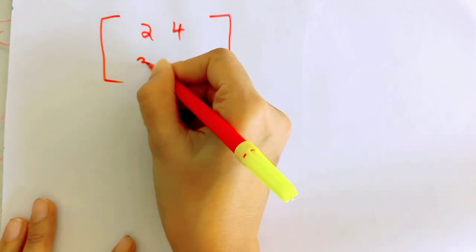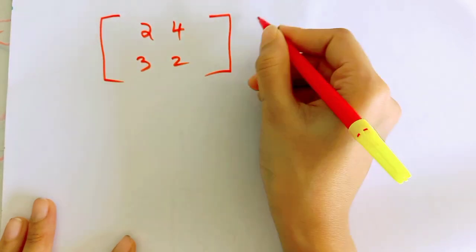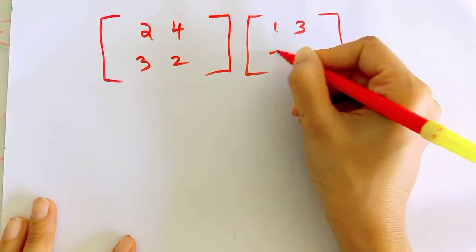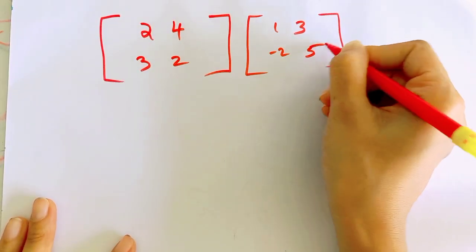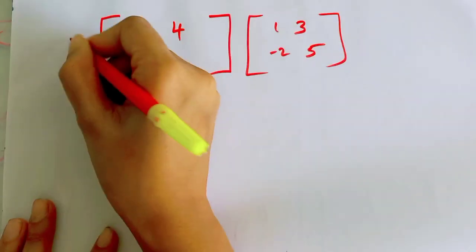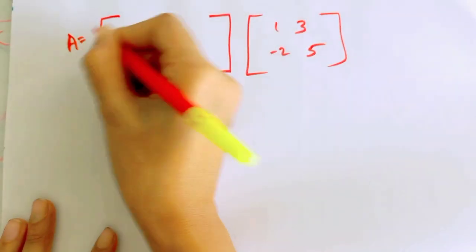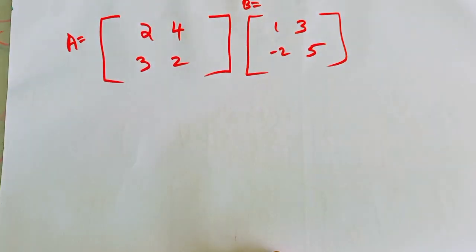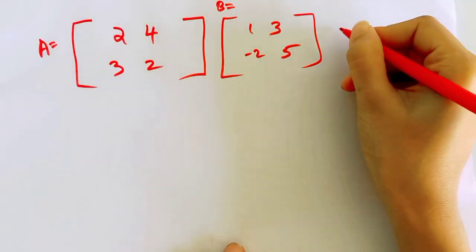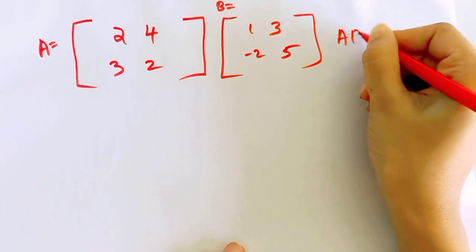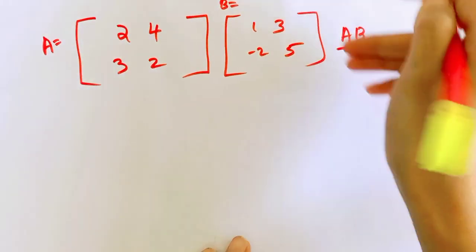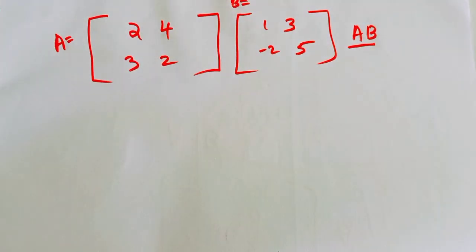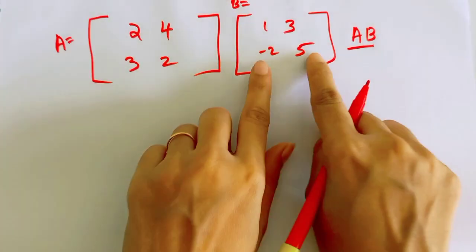We have a matrix A which is 2, 4, 3, 2, and the first matrix B is 1, 3, minus 2, 5. This is A and this is B. We have to multiply these two matrices — A into B, and also B into A.